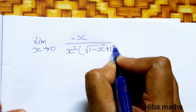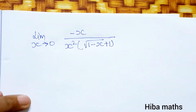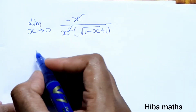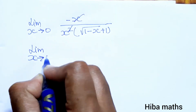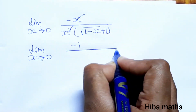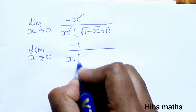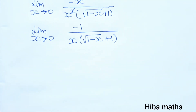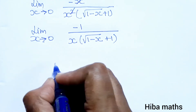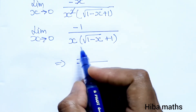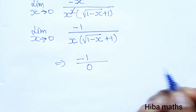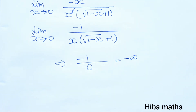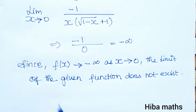Next line: limit as x tends to 0 of minus x divided by x squared into (root of (1 minus x) plus 1). We cancel one x from x squared, leaving x in the denominator. So we get limit as x tends to 0 of minus 1 divided by x into (root of (1 minus x) plus 1). Substituting x equals 0 gives minus 1 divided by 0, which tends to minus infinity.